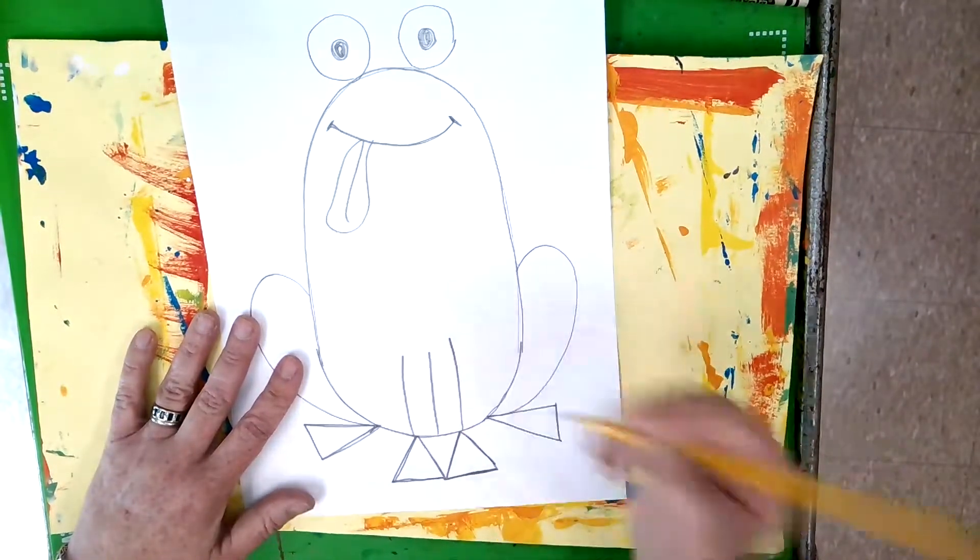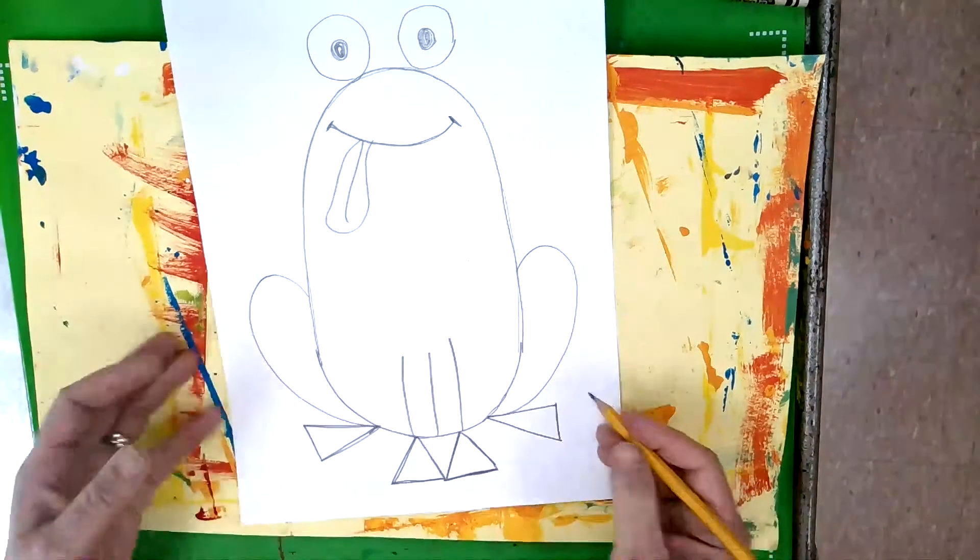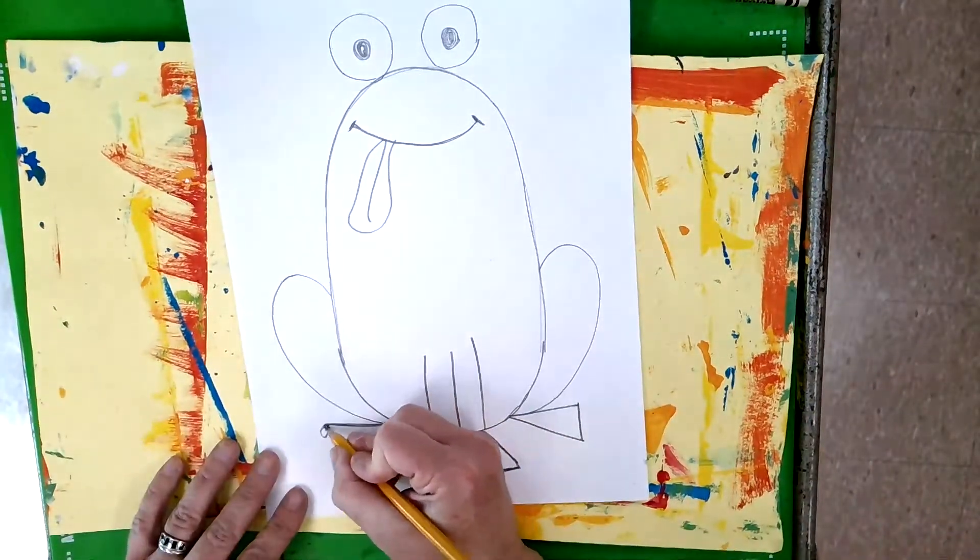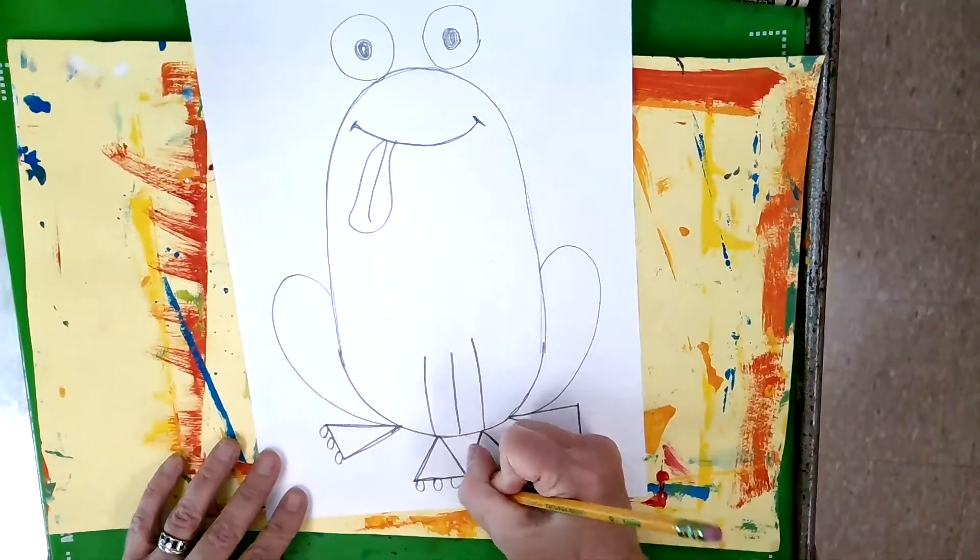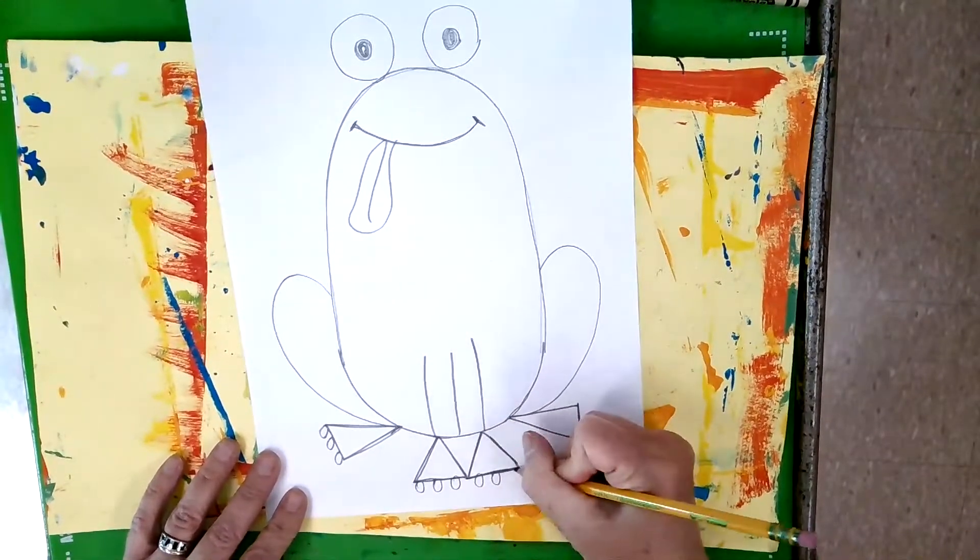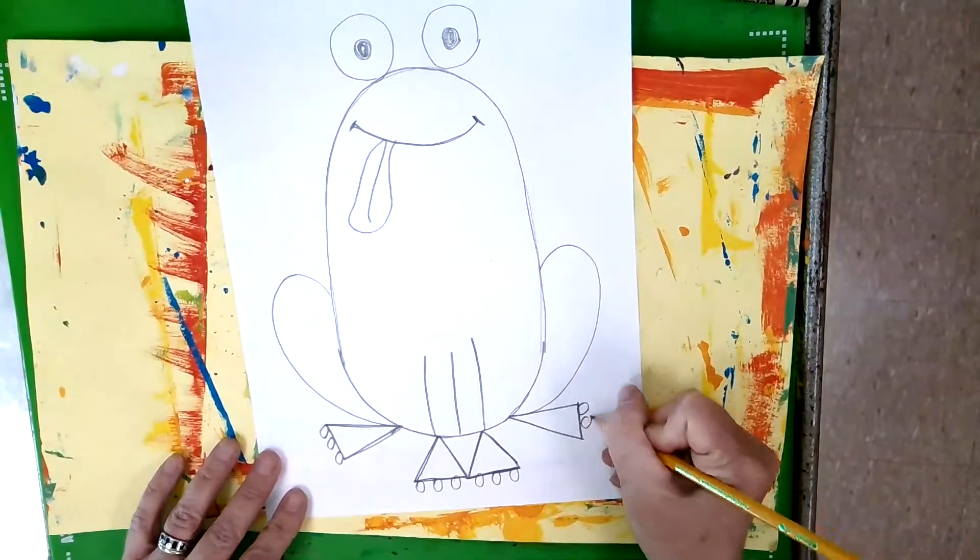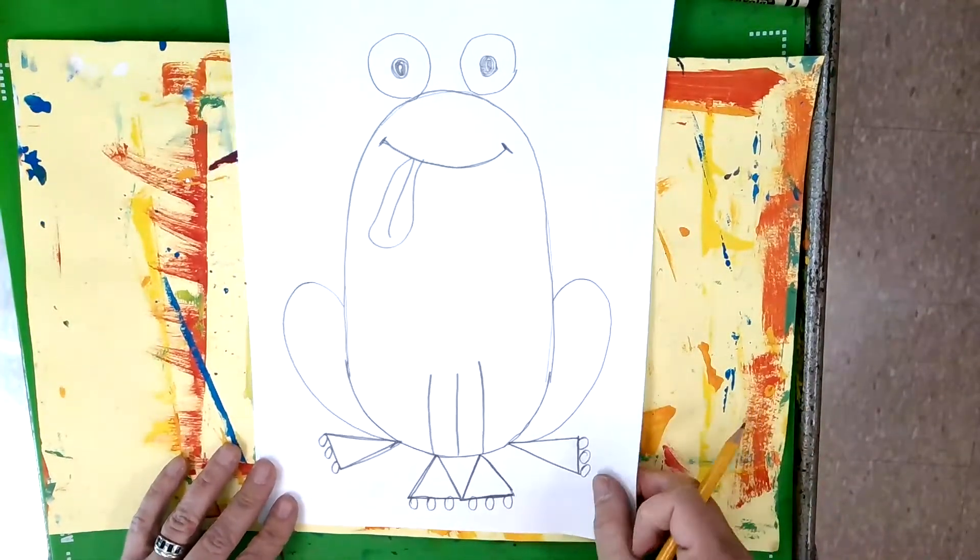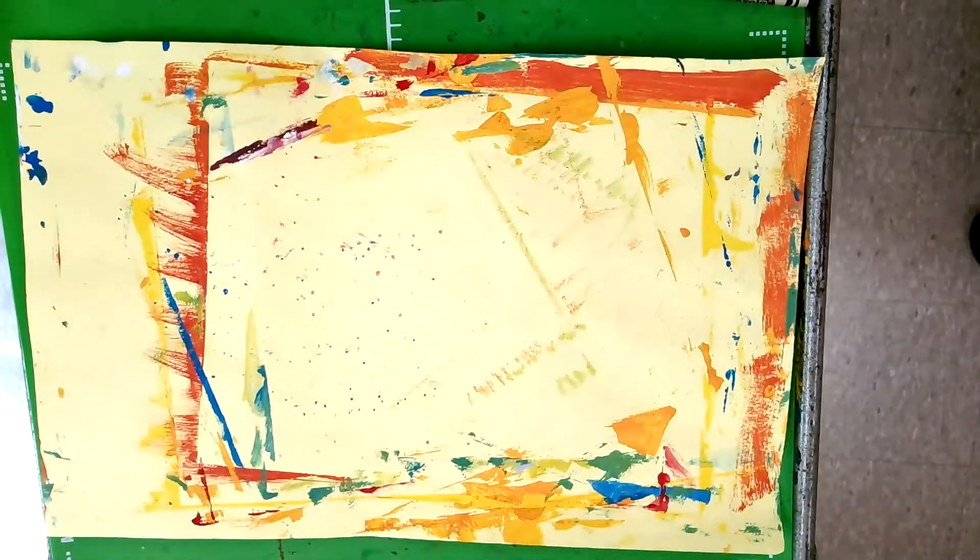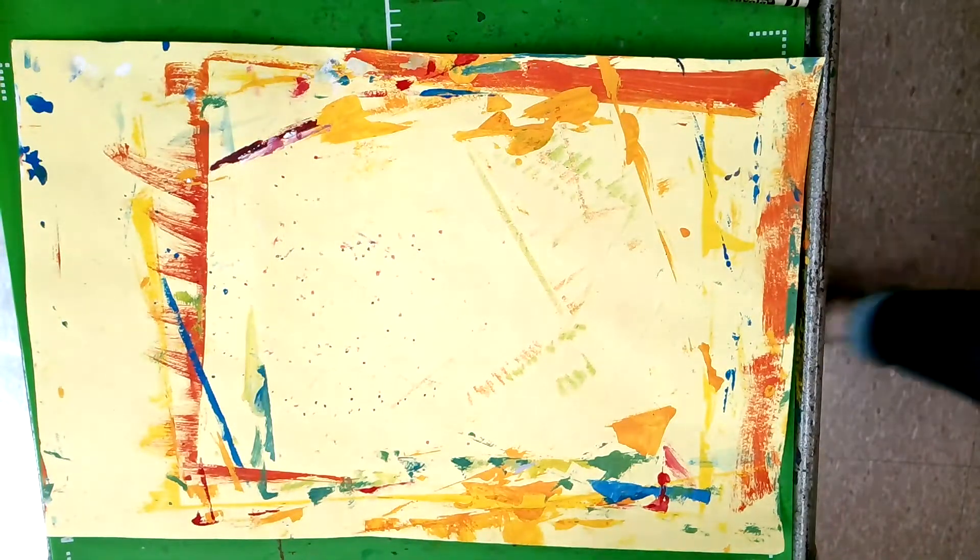One of my students gave it toes and now I think it's so cute with the toes, so I think we should add circles for the toes. He looks good. That was a great practice. Now I'm gonna do it again on my green piece of paper.